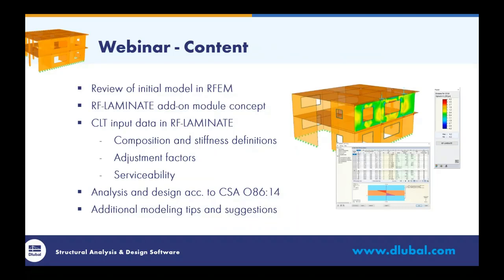For the content of the next hour today, I will review the initial model I've already created within our main program RFEM — this includes basic geometry as well as loading. Then I'll explain how the add-on module RF-LAMINATE works within RFEM. Within RF-LAMINATE, we'll input CLT data including composition definitions, stiffness adjustments, the adjustment factors directly from the CSA standard, as well as serviceability design. Then we'll run our full analysis and design according to CSA O86, and I'll give additional modeling tips including how to deal with singularities.